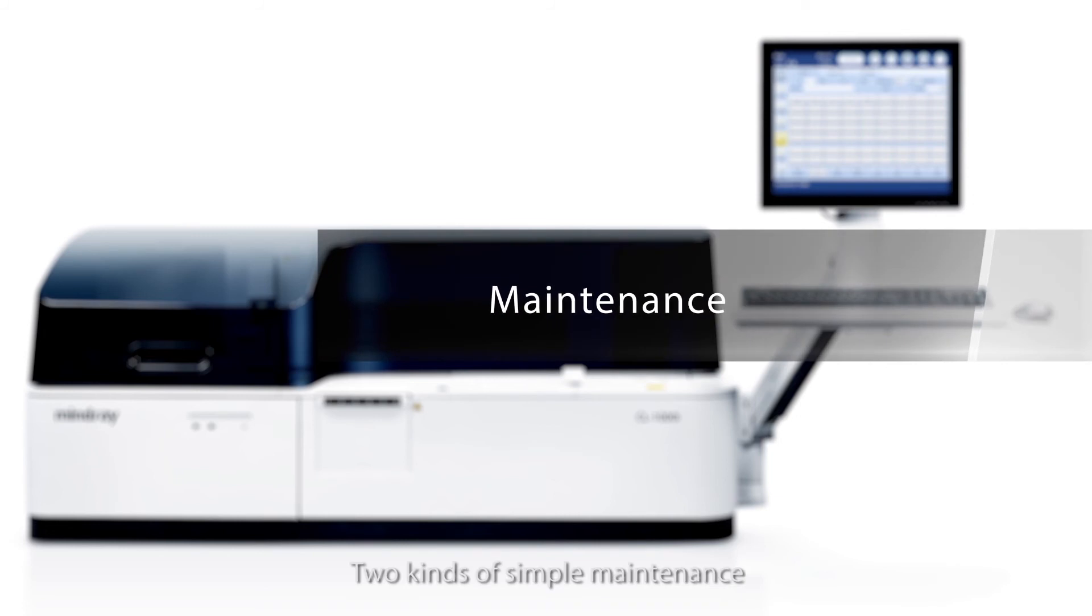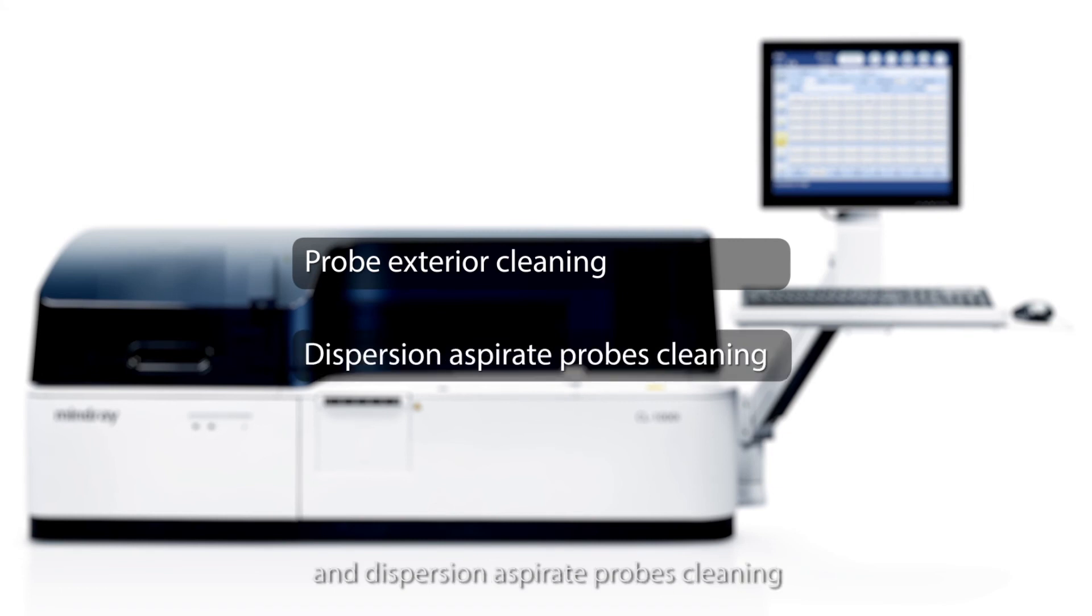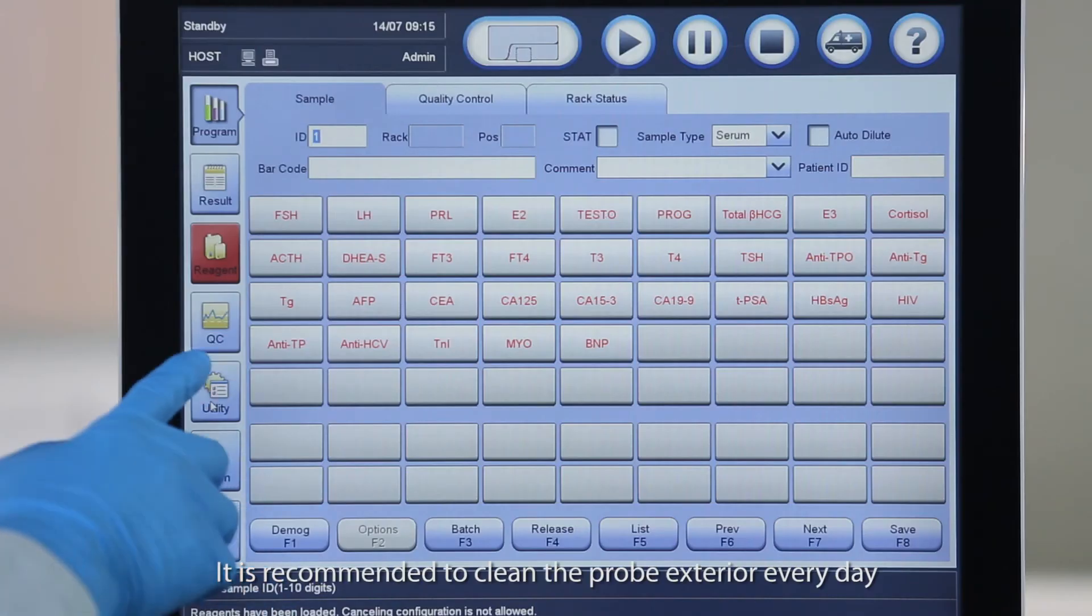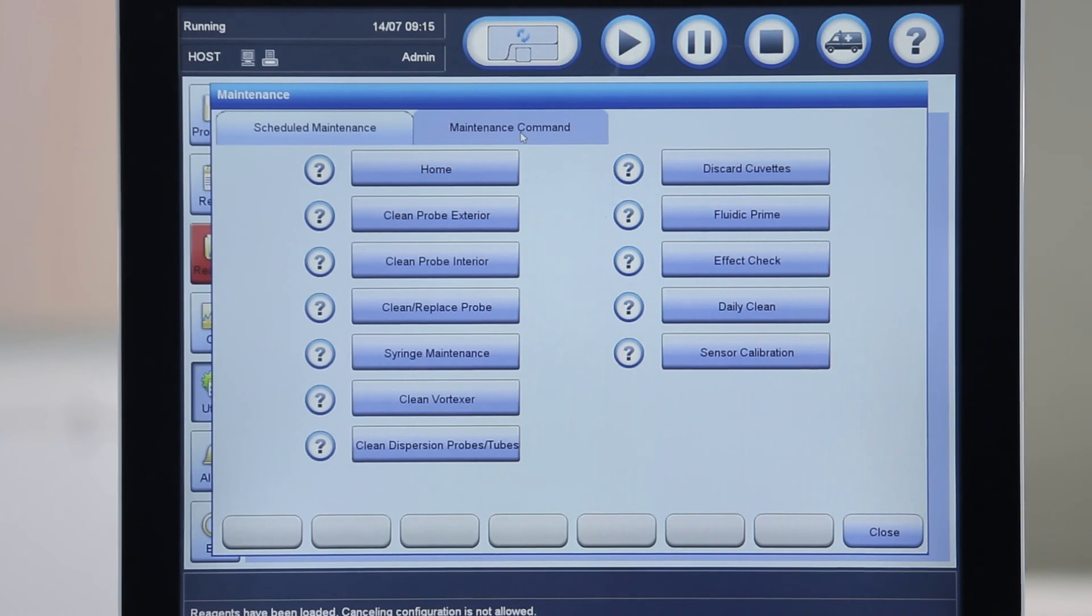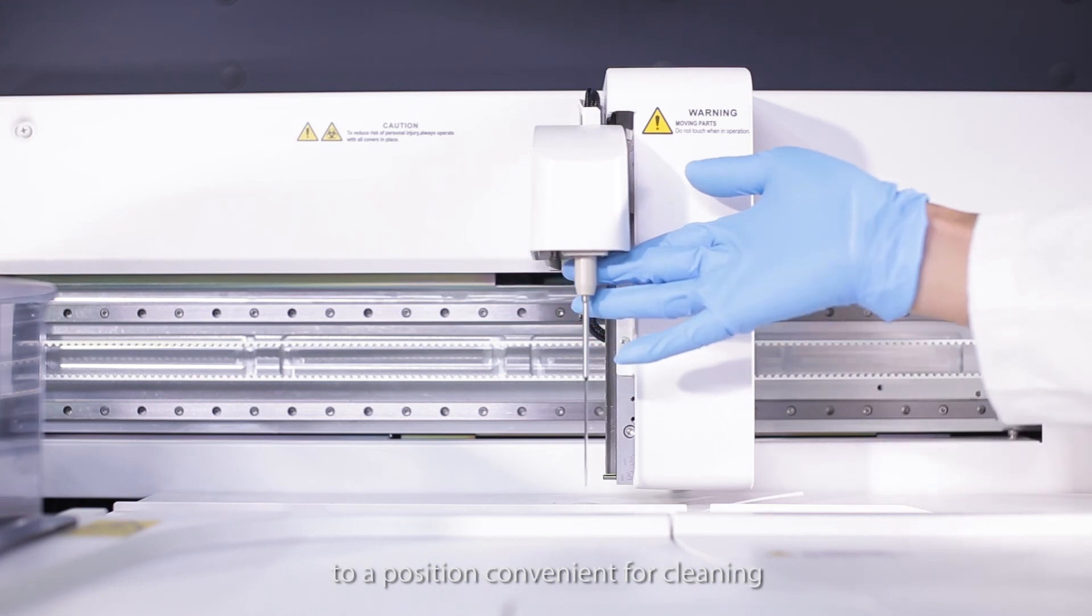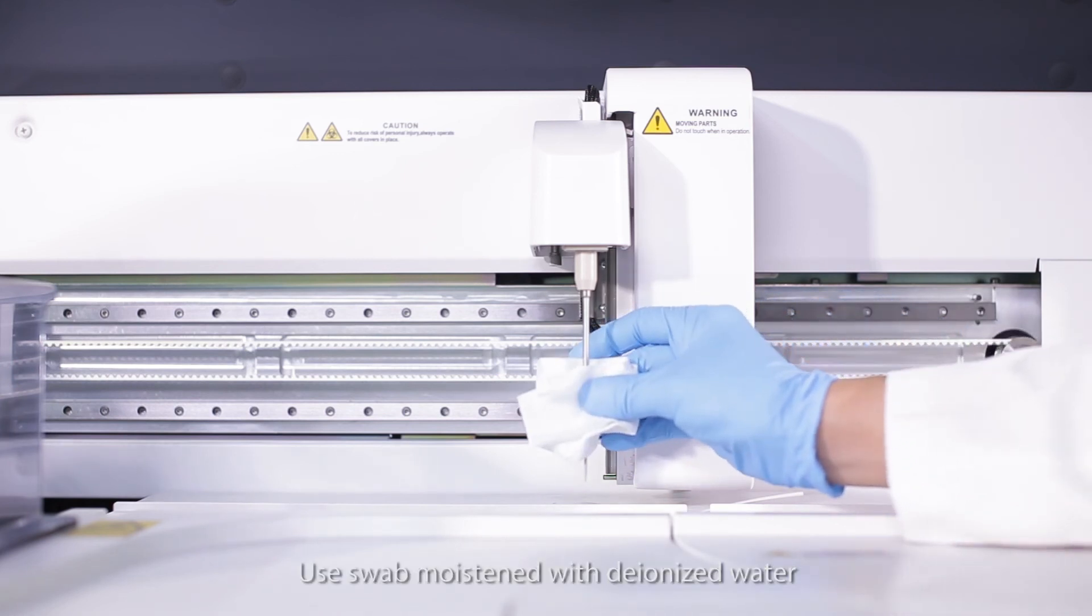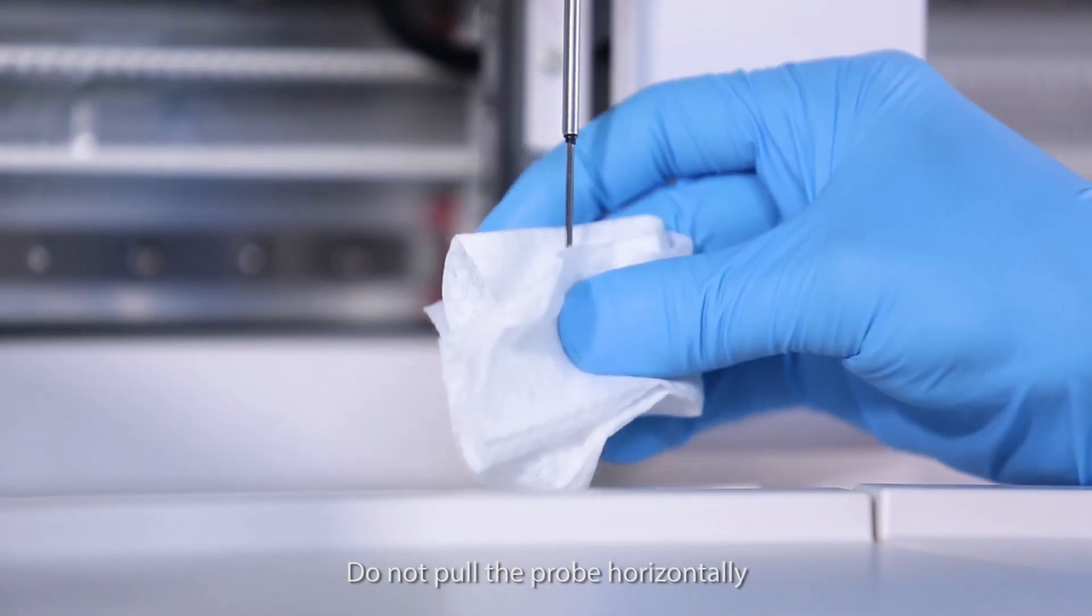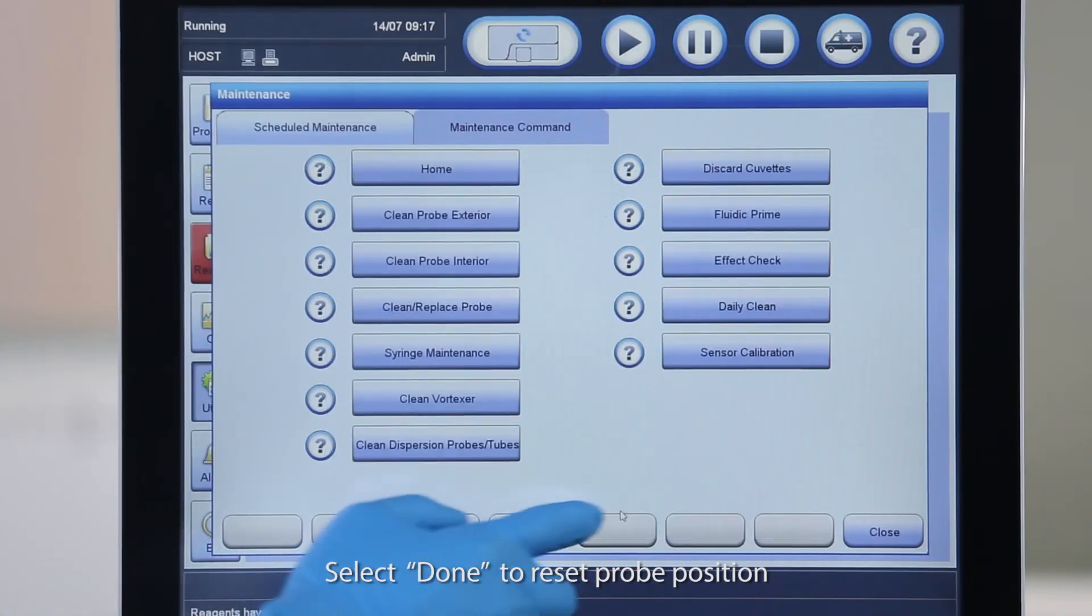Two kinds of simple maintenance will be introduced in this video: probe exterior cleaning and dispersion aspirate probes cleaning. It is recommended to clean the probe exterior every day. Go to Maintenance and click Maintenance command. Choose Clean Probe Exterior and click Continue. Move the probe arm to a position convenient for cleaning. Use alcohol swab to gently wipe the probe. Use swab moistened with deionized water to clear the ethanol on the probe. Do not pull the probe horizontally to prevent probe damage. Select Done to reset probe position.